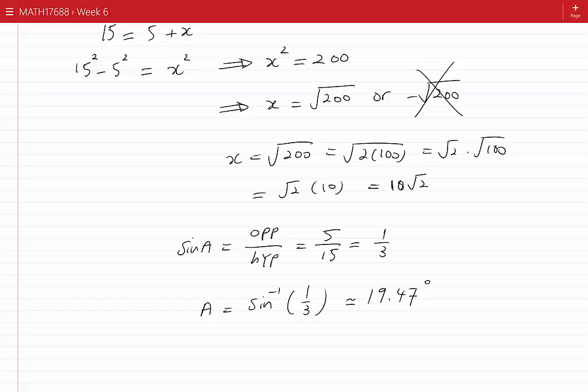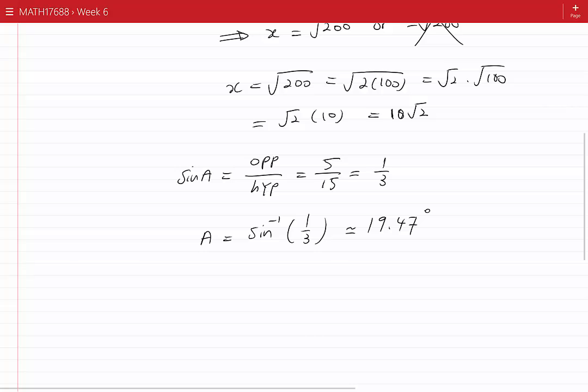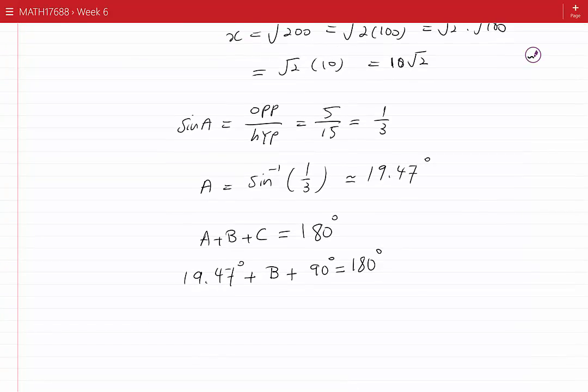Now, knowing A, I should be able to find the other angle because the sum of the angles inside a triangle is 180 degrees. Therefore, A plus B plus C is 180 degrees, and that means that 19.47 degrees plus B plus 90 degrees is 180 degrees. This is a linear equation that I can solve for B, and it gives me B to be equal to 70.53 degrees.